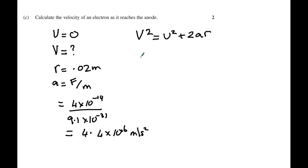So now we can work out v squared. V is now the square root of all this. U of course is 0 so we can automatically make that 0, plus 2 by acceleration which we just determined, 4.4 by 10 to the power of 16, and of course r is 0.02.